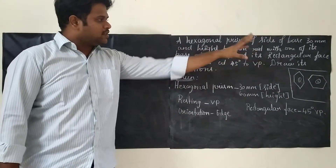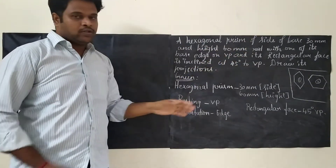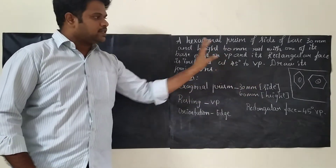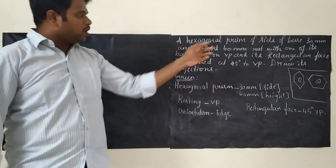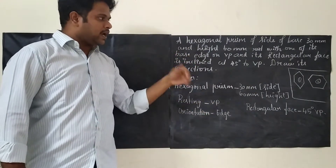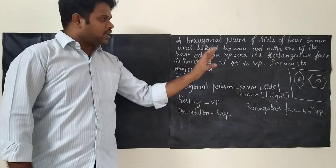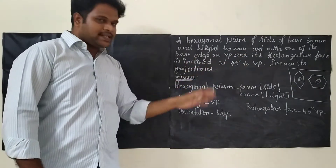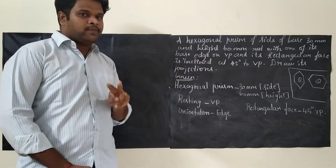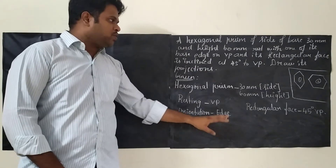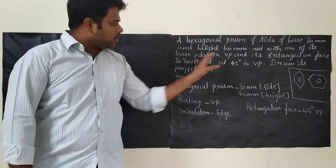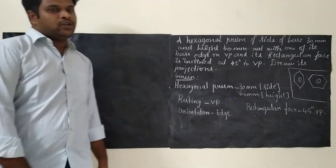A hexagonal prism of side base 30mm and height 60mm, resting with one of its base edges on VP. So, resting will be on VP. Another thing is orientation — they clearly mentioned that one of its base edges, so it is an edge-oriented one. Its rectangular face is inclined at 45 degrees to BP.